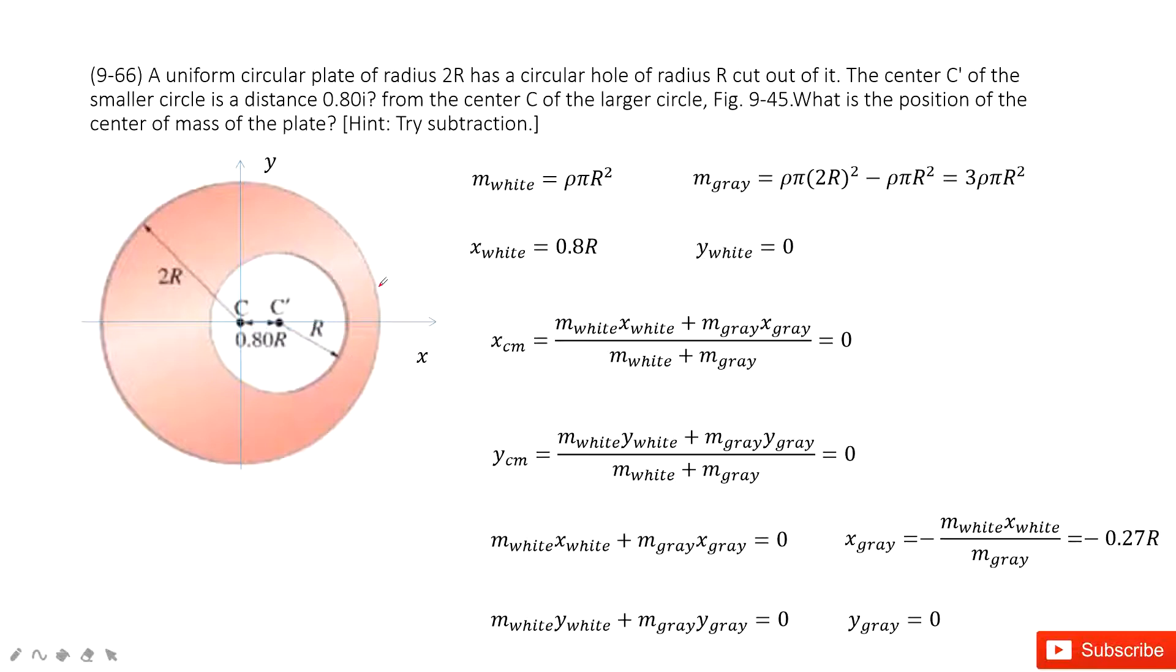In this chapter, we talk about linear momentum. In this problem, we need to find the center of mass for this green part, for this wrist part. We can consider it includes two parts.